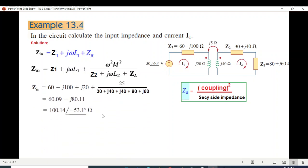So Z1 is 60 minus j100, plus j20 which is j omega L1. Then the coupling value: 5 squared is 25, divided by Z2 which is 30 plus j40, plus j40 plus 80 plus j60. Then you have to convert to polar form to calculate current I1.